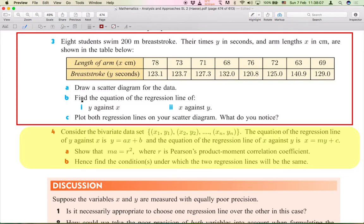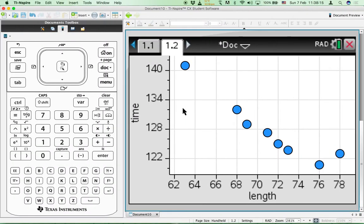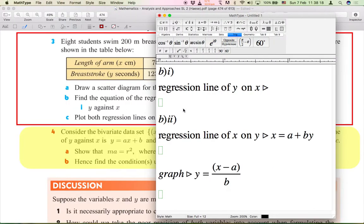And for part B we are asked to find the equation of the regression line of first Y against X and secondly X against Y. I would like to give you a short lecture first. The regression line of Y on X we will use the GDC function. However, for me to graph the regression of X on Y we should swap data. Later on I will talk clearly about that. So we will finish part B1 first.